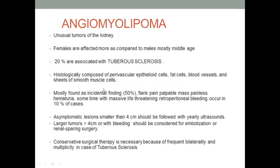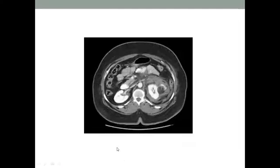Angiomyolipoma usually presents as an incidental tumor but can present as a flank mass or hematuria, and sometimes it can be associated with massive retroperitoneal bleeding requiring urgent intervention. Usually it is small in size, less than four centimeters, and diagnosed on ultrasound. Tumors larger than four centimeters require embolization or conservative surgery, as it can be bilateral and multiple, as in tuberous sclerosis. Here you can see the tumor very well outlined.